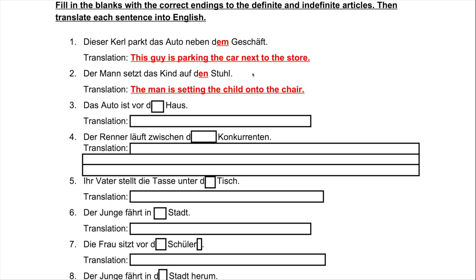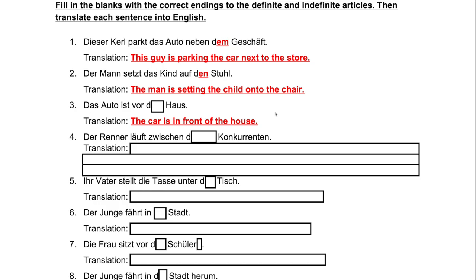'Das Auto ist vor ___ Haus.' 'Vor' is the two-way preposition and 'ist' is the verb. The car is in front of the house. You can't be in the direction of something — it doesn't work like that. So this has to be stationary, which uses the dative case. 'Haus' is a neuter noun, so we use 'dem Haus': 'vor dem Haus.'